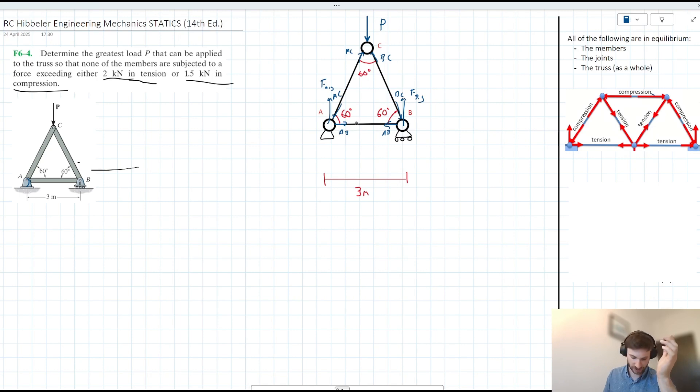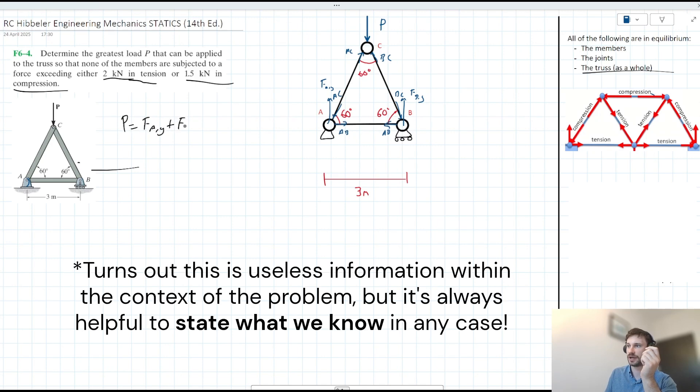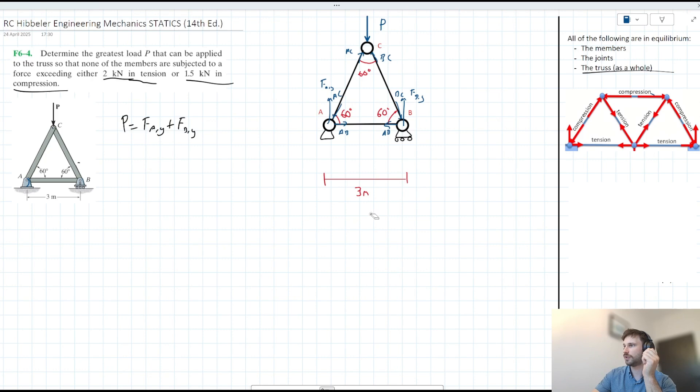Let's go ahead and solve. So we can start off by considering the equilibrium of the truss as a whole. Well, we have P acting down, we have F A Y acting up and F B Y acting up. We're dealing with an equilateral triangle here. P is acting kind of equidistant in a sense from joints A and B. So we can say that P is just equal to the sum of F A comma Y and F B comma Y, right?